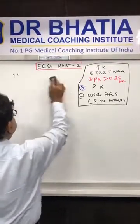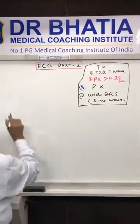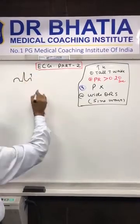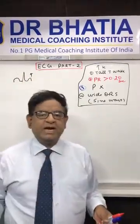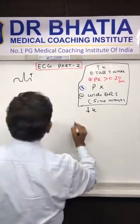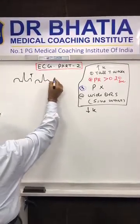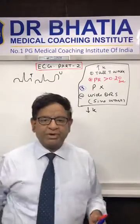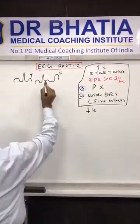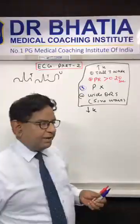In hypokalemia, the patient comes to us and this is his normal ECG T wave. Once hypokalemia starts, the first finding is T becomes short and a prominent U wave appears. Point to be noted: the T wave height has decreased.